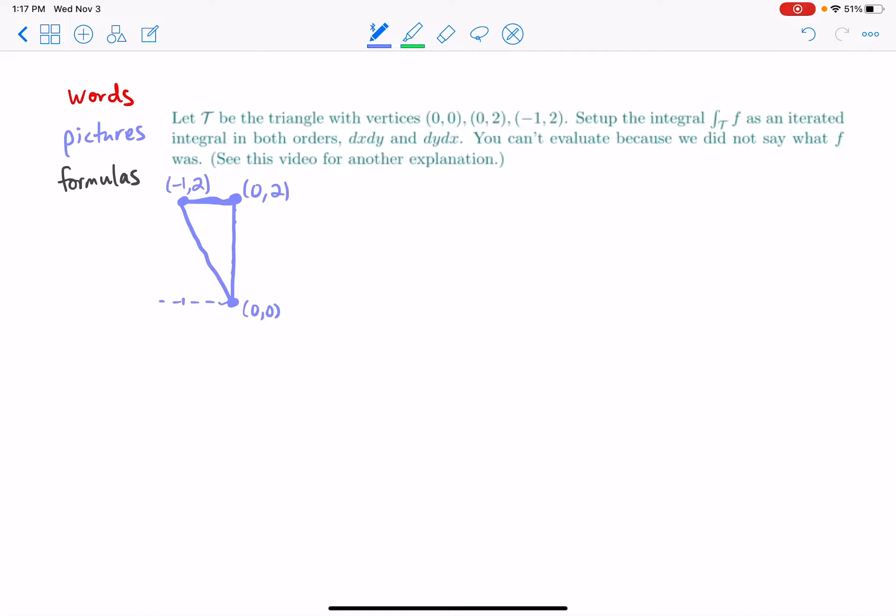So let's actually, since we're gonna do two different ways, we're gonna get an iterated integral in two ways, I'm actually gonna just redraw the triangle.